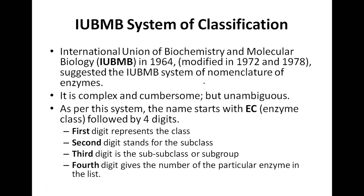The reason IUBMB was created was that enzyme names were called tribal names. The biggest issue with tribal names was that we had more than one substrate for a single enzyme, or more than one enzyme for a single substrate. The tribal names were based on their functions — for example, pepsin and trypsin are both involved in digestion, making it difficult to memorize or differentiate them. They couldn't be given a common name.